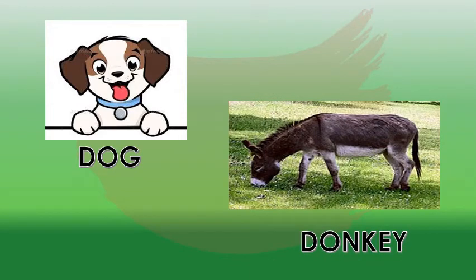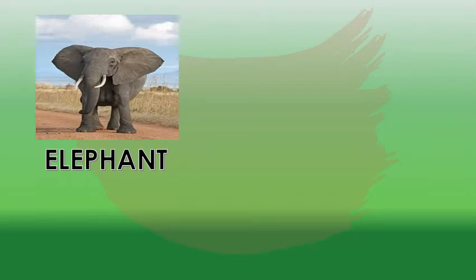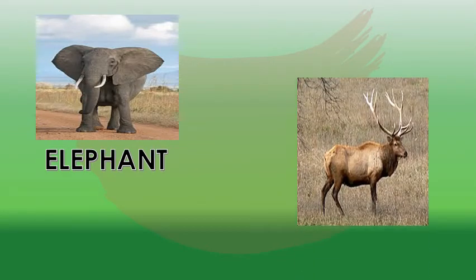This is donkey. What is this? This is donkey. What is this? This is elephant. This is elephant. Now, what is this? This is elk. This is elk.